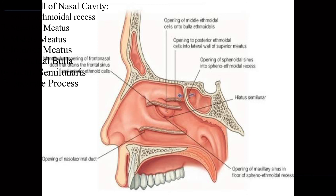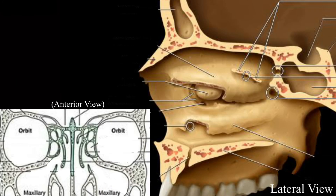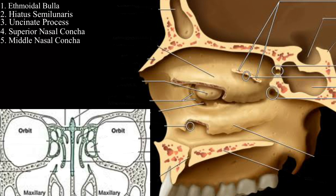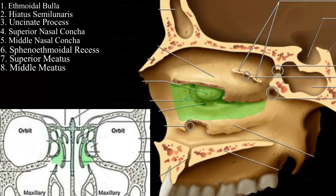Now after seeing this, you can understand these structures on the bone itself. This is the ethmoid bone showing the ethmoidal bulla, hiatus semilunaris, uncinate process, the superior nasal concha, the middle nasal concha, sphenoethmoidal recess, superior meatus, and middle meatus. This is all about the ethmoid bone. Thank you.